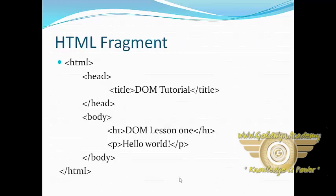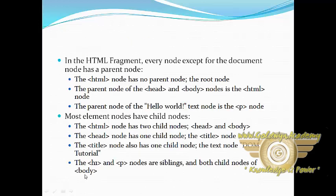Now let's see an HTML fragment and its siblings, parents, and children. We have created one HTML document which contains a head element, title element, body element, and in the body element two other elements called h1 and p. Now let's see which are the parents, which are the children, and which are the siblings.